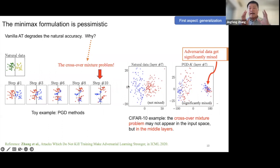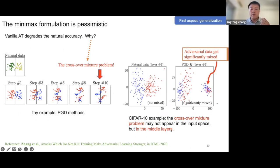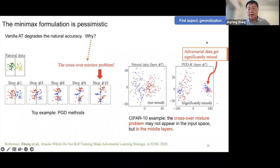Many empirical studies have found that vanilla adversarial training degrades natural accuracy. Why? It is because there exists a crossover mixture problem. In a toy example, the adversarial data of different classes overshoot into each other's region. In the real-world CIFAR-10 example, this crossover mixture problem may not happen in the input space but in the middle layers. Looking at layer 7 of an 8-layer convolutional neural network, the adversarial data gets significantly mixed at layer 7.